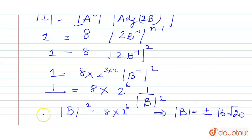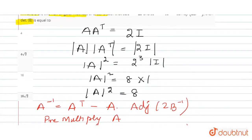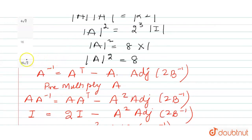After simplification, we get the value of determinant of B as plus or minus 16 root 2. This is the final answer. We can also see that the correct option here is the fourth option — option D.